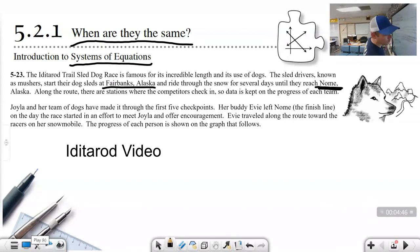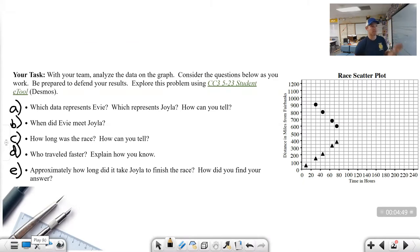Evie is trying to meet up with Joila and offer encouragement. Evie traveled along the route toward the racers on her snowmobile. The progress of each person is shown on the graph that follows. So you should be looking at your graph. You have a graph that looks just like this one in your notebook. We're going to answer five questions. Notice this is time, and this is distance in miles from Fairbanks.